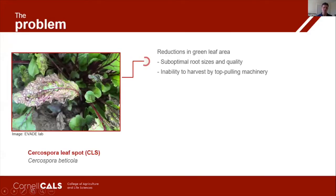The dominant disease affecting beets is the Cercospora leaf spot, caused by the fungal pathogen Cercospora beticola. The symptoms begin as small gray lesions that coalesce to encompass the entire leaves. The disease causes reductions in green leaf area, which results in sub-optimal root sizes and quality, and also the inability to harvest by top-pulled machinery.